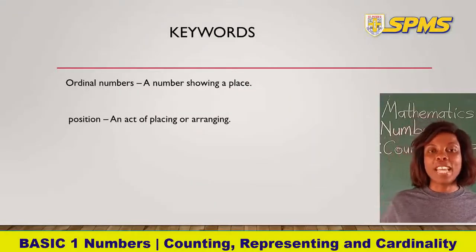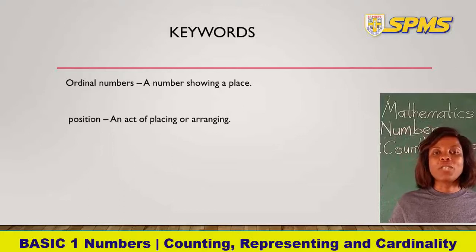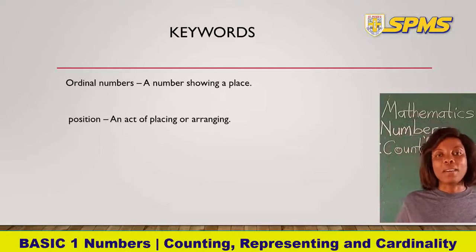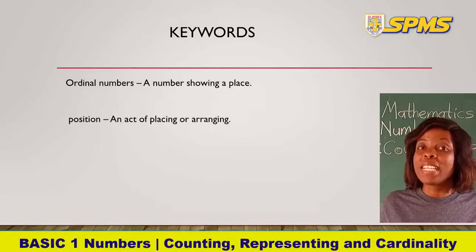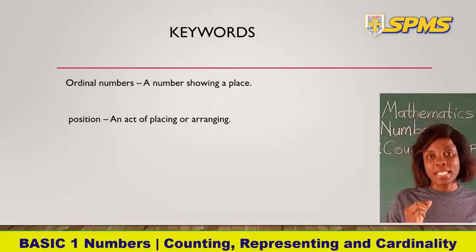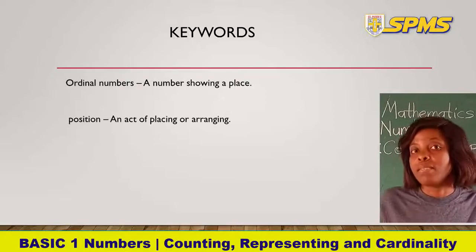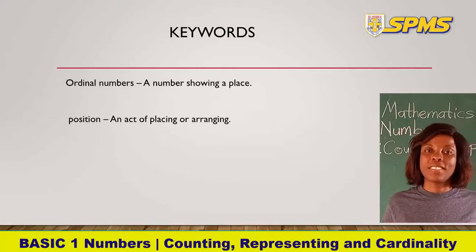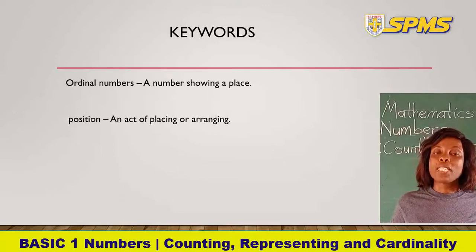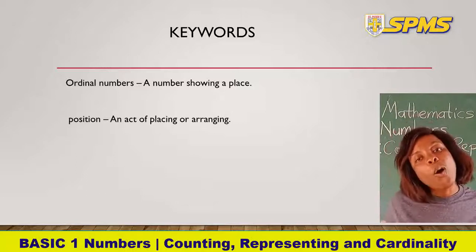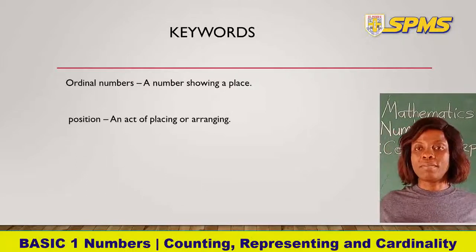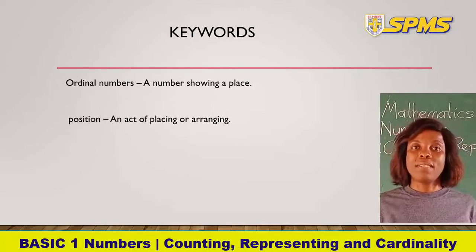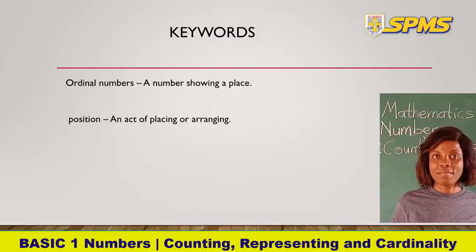Let's look at our key words for today. Our first key word is ordinal number. It simply means a number showing a place — the place of anything. The next key word is position. Position is the act of placing, ordering, or arranging. So if you arrange something at a particular place, that is the position of the thing.